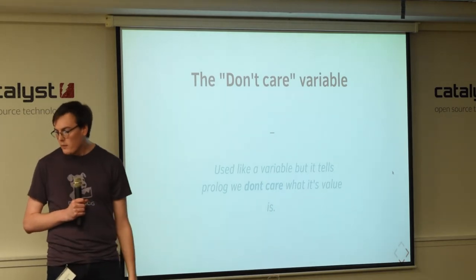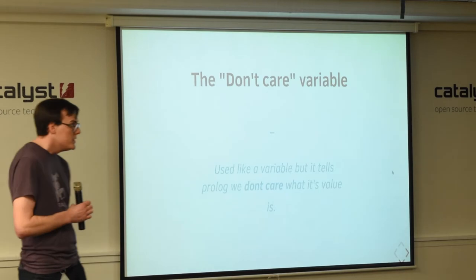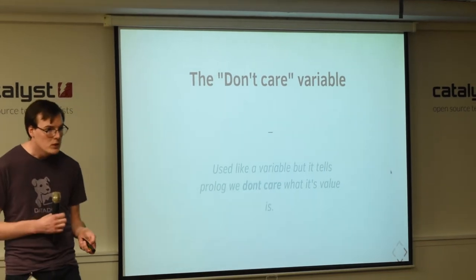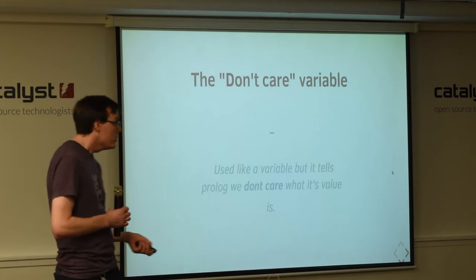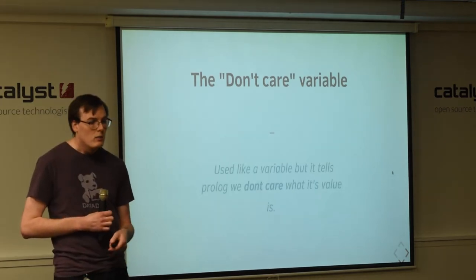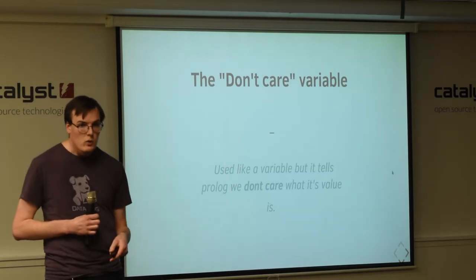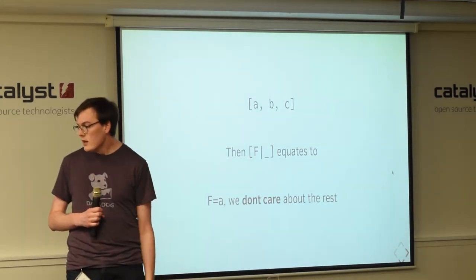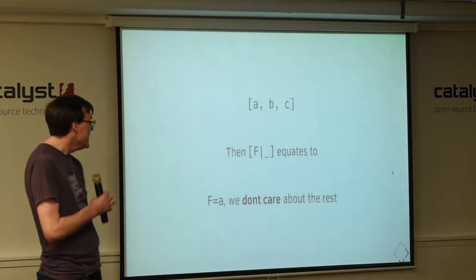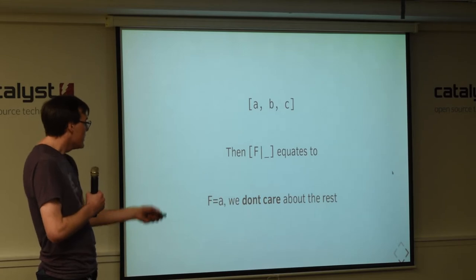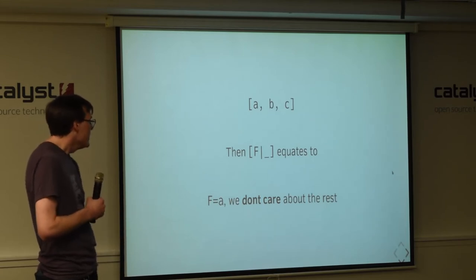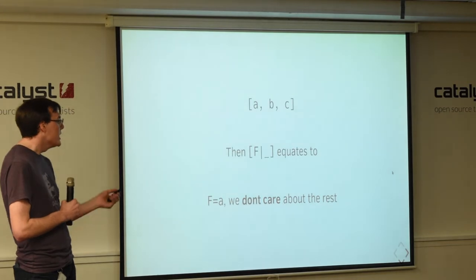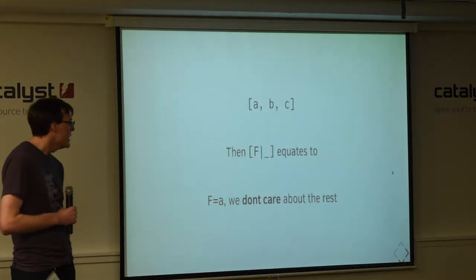There's one more variable that I want to introduce, which is the don't care variable, and if you see in the middle of the screen, it's just an underscore. So, we can use this like a regular variable, but what it means is that we don't actually care what that value is. So, prologue can put any value there, and we're not interested in what it means. So, for lists, if we consider the list a, b, c, then H bar don't care will tell us that H is a, and we just won't get any information about what's in the rest of the list. But that's fine, because there's cases where we don't actually care. We just want to know if H is the first element of the list.